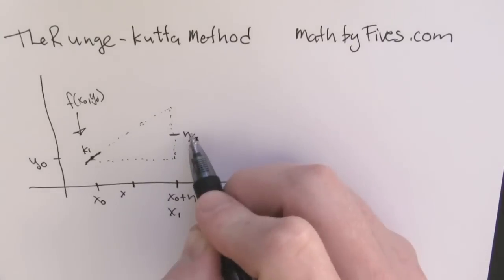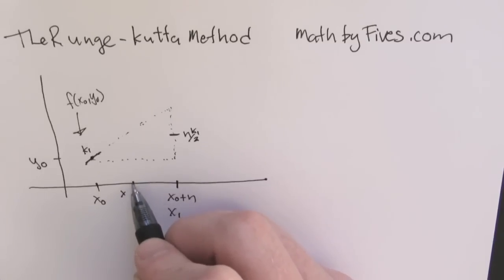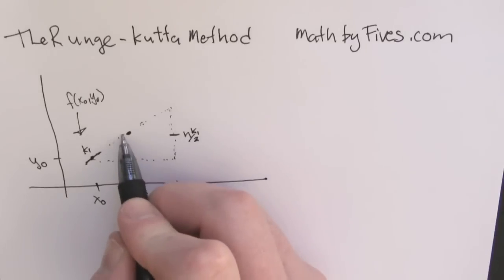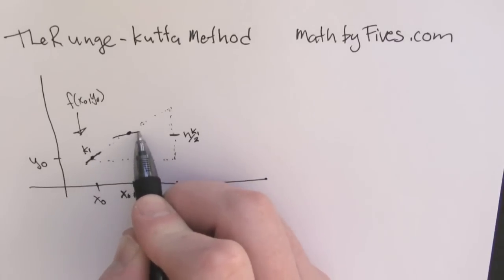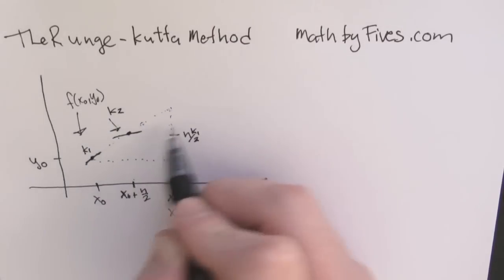So now that he finds that h over 2, or that new height, using that first slope, he goes half of h out from x-naught. Why does he do that? Because he's going to try to get k2. So he takes that new half height from our first approximation, and he calculates the slope again, and that's at k2.